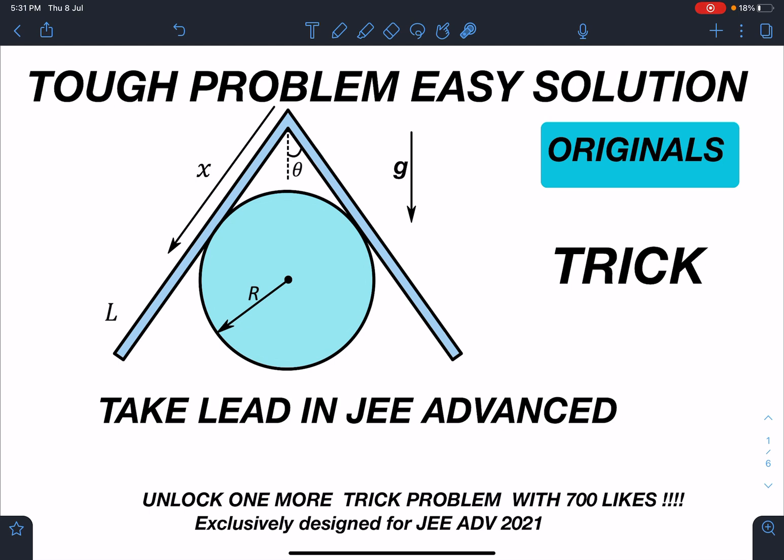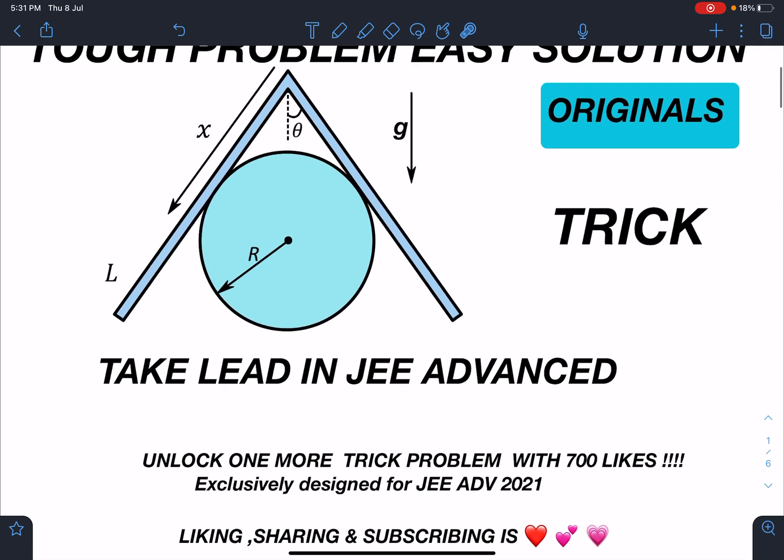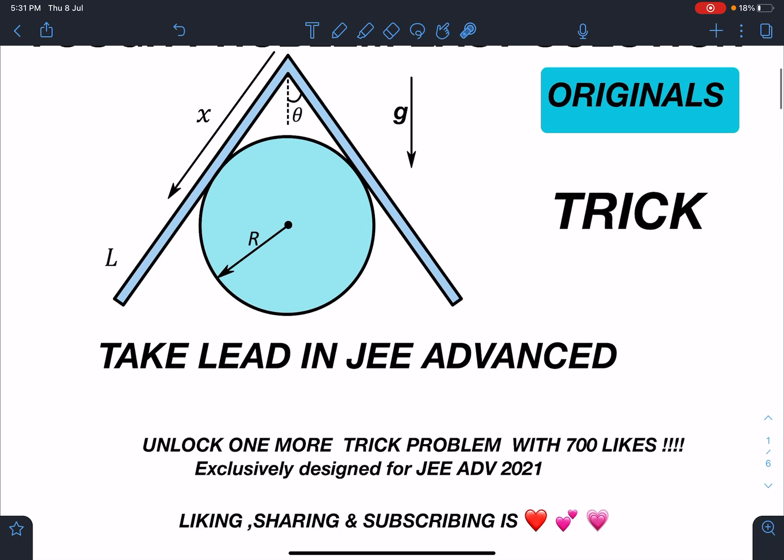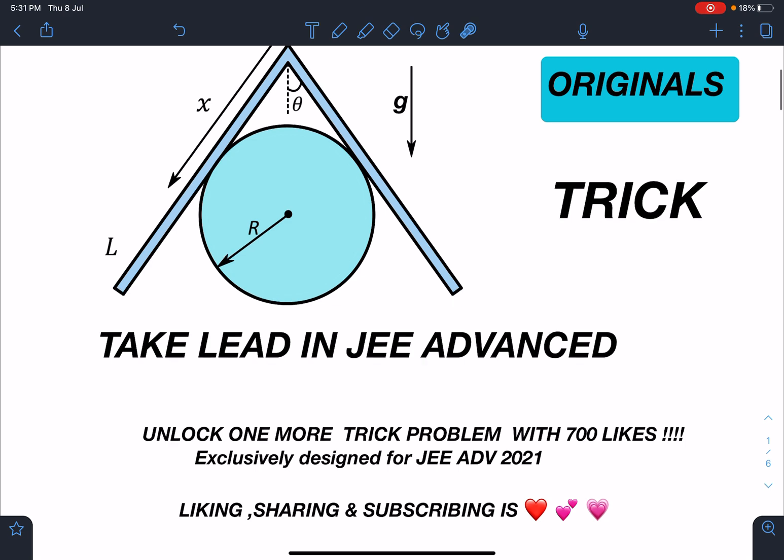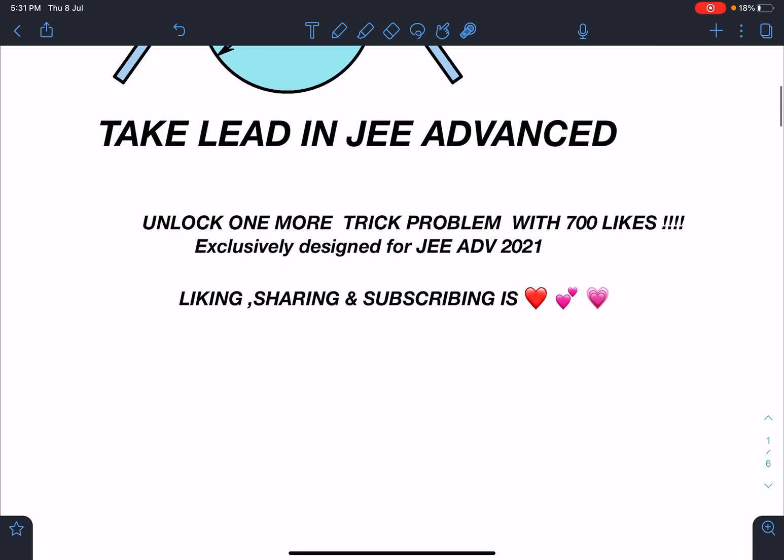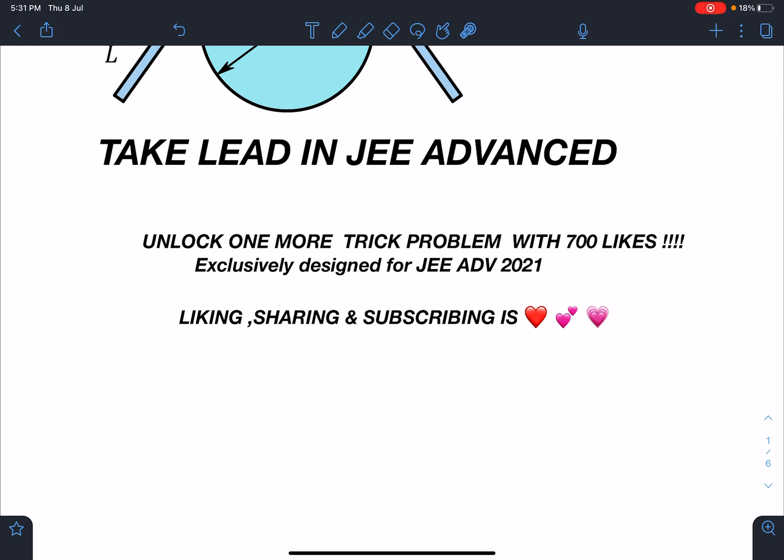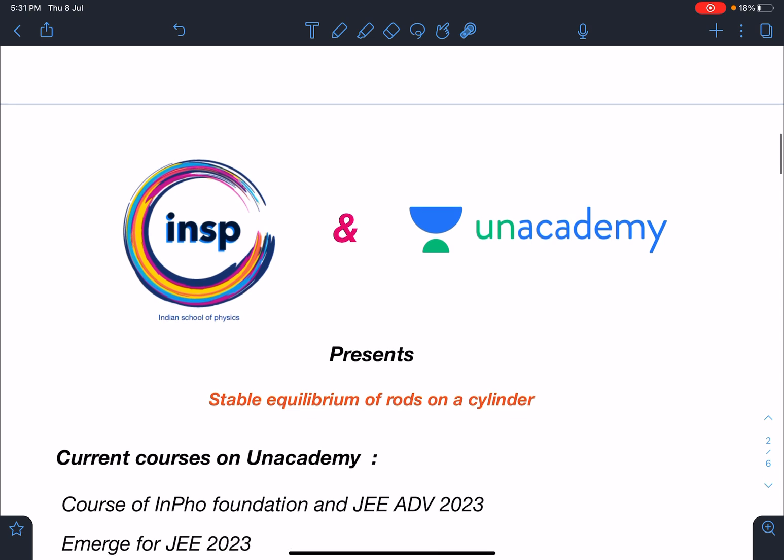You can unlock one more trick problem with 700 likes. In the last problem we had the goal of 700 but we are much behind. This type of problem can definitely come in JEE Advanced type of exam. It's a very simple problem and guys, liking, sharing, subscribing is love. Already you are doing that so keep doing it.